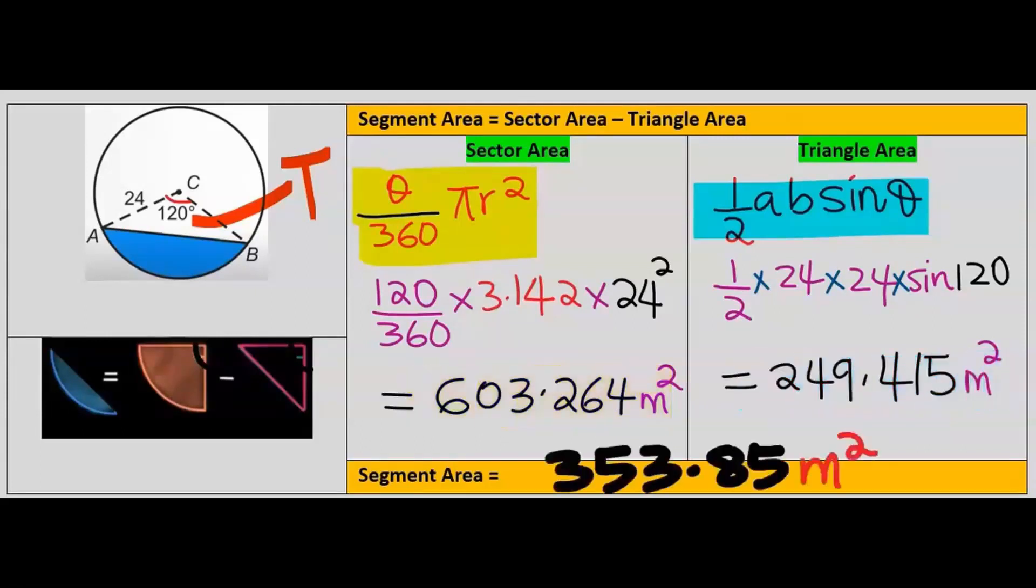The area of the segment is area of the sector minus area of the triangle, which is 353.85 meters squared.